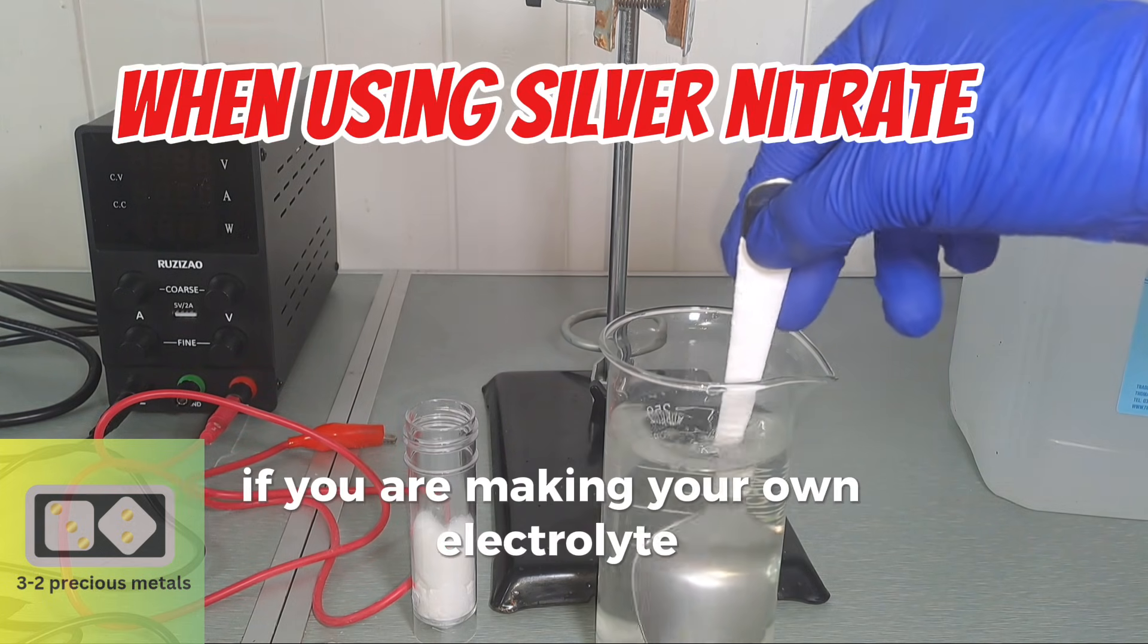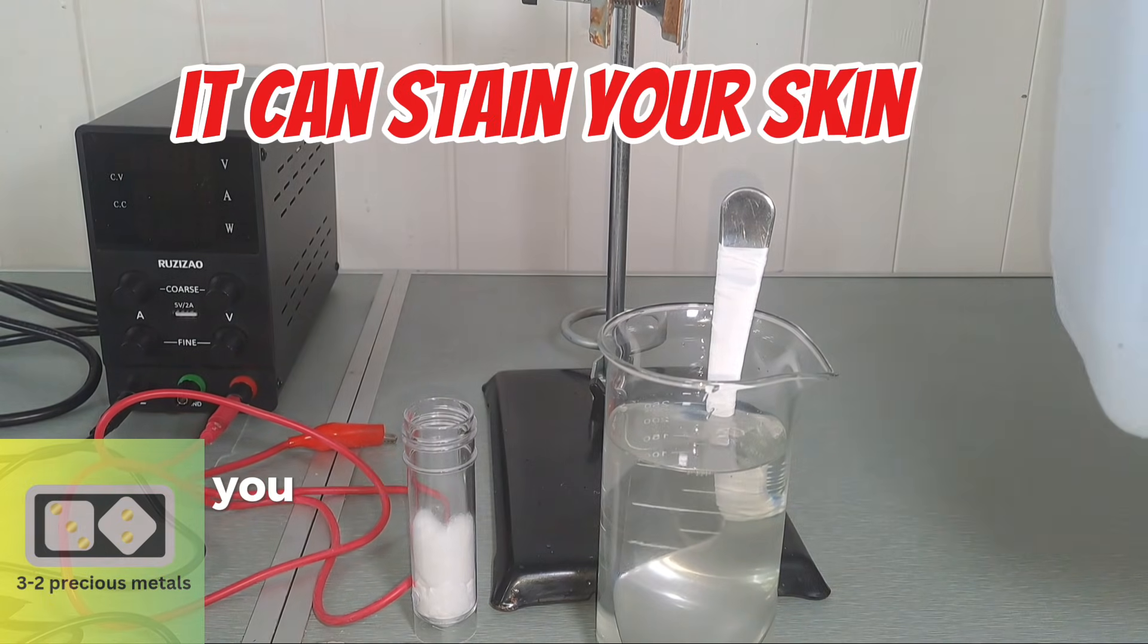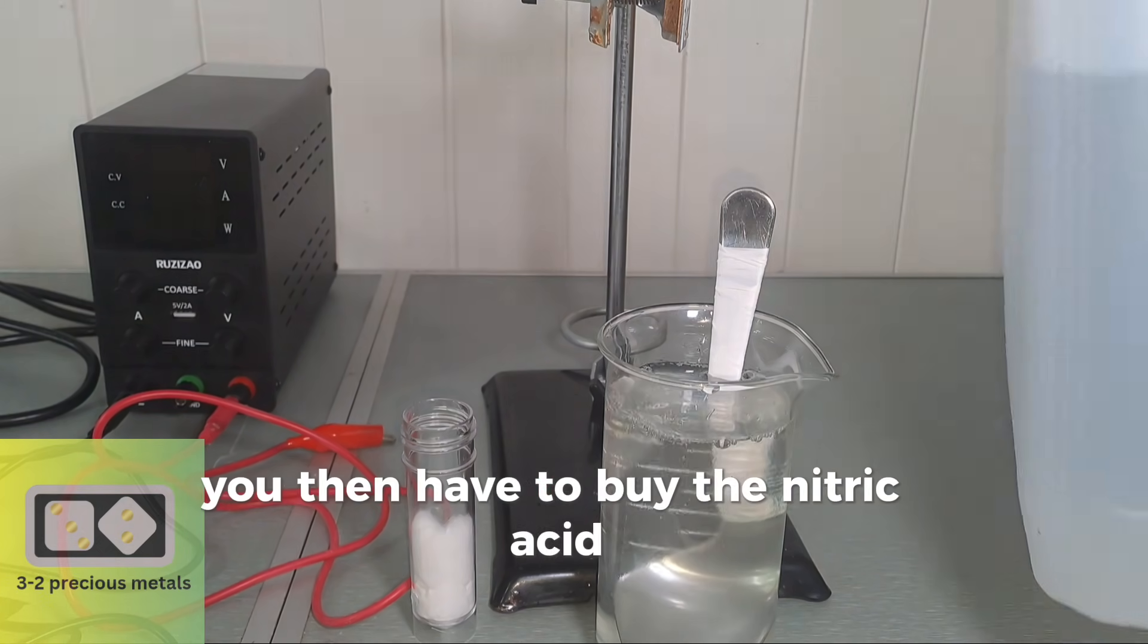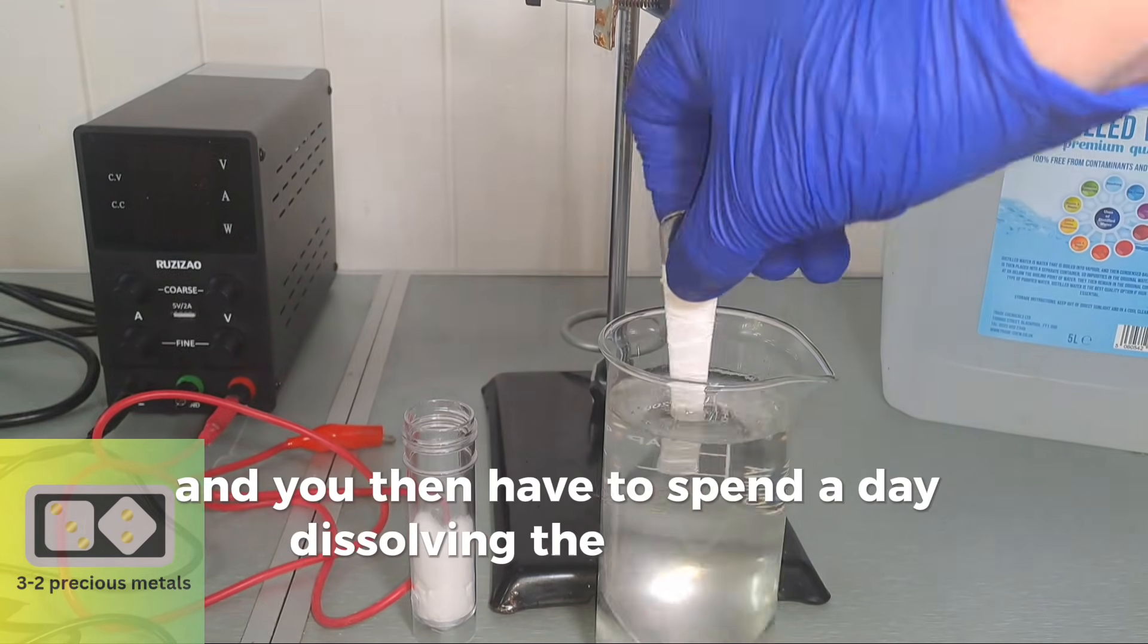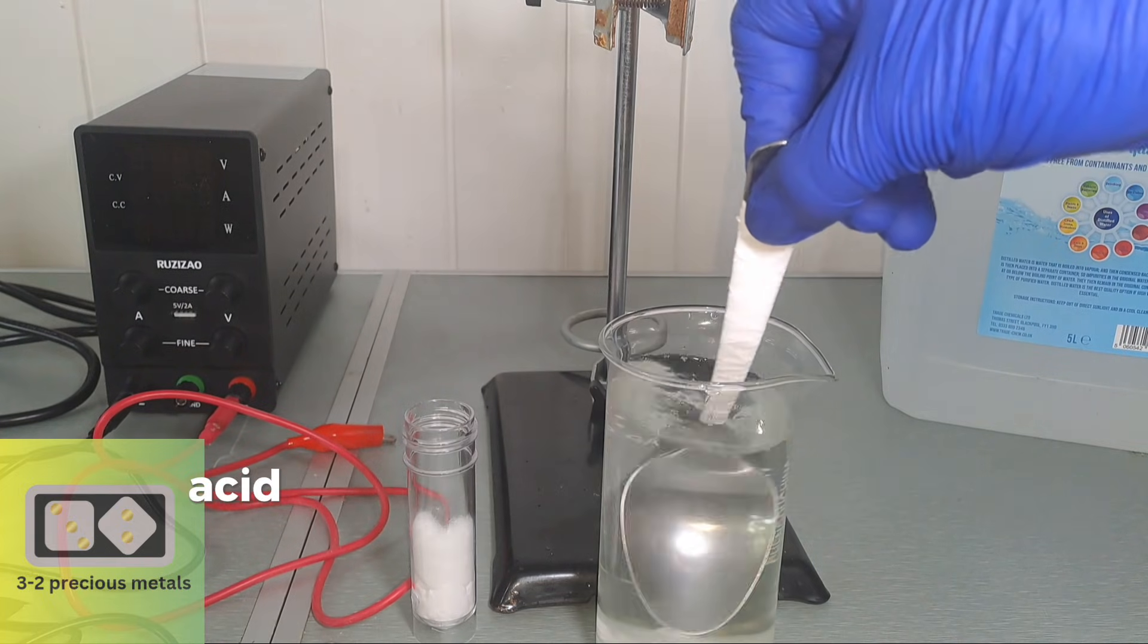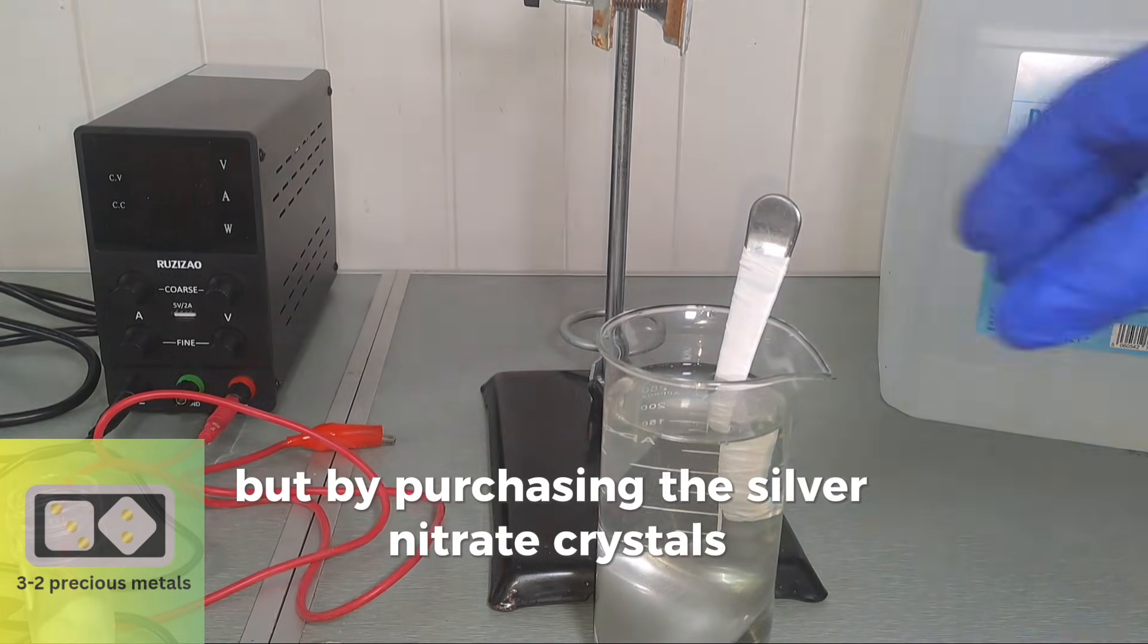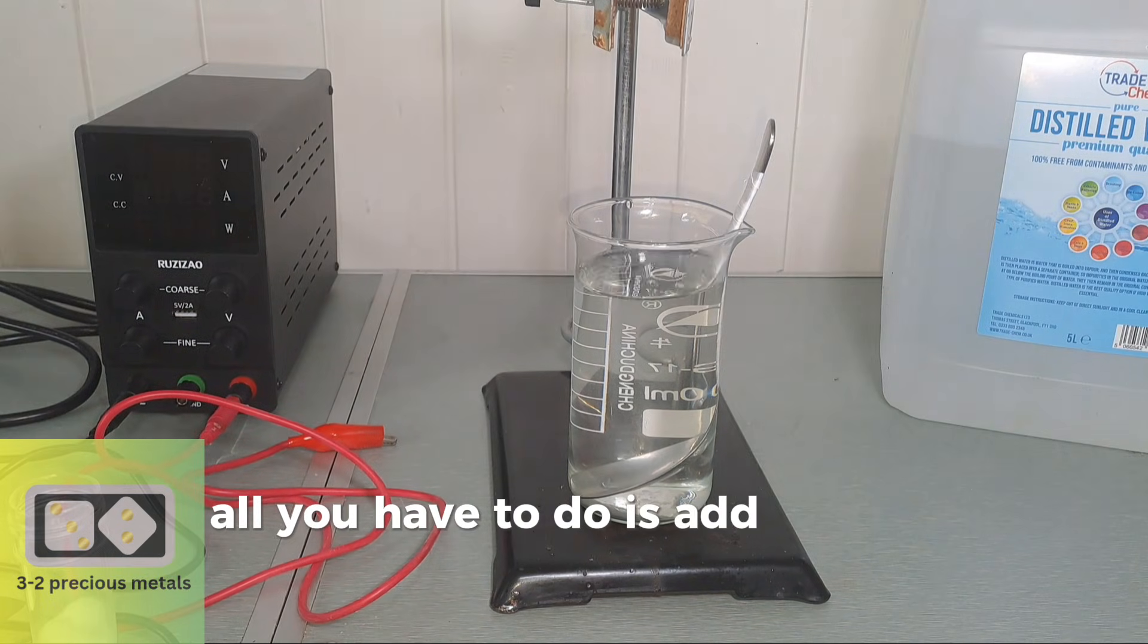If you are making your own electrolyte by dissolving pure silver in nitric acid, you have to first purchase the silver, which probably has a premium attached. You then have to buy the nitric acid, which is expensive in some countries, and you then have to spend a day dissolving the silver and making sure you've gotten rid of all the nitric acid in the electrolyte. The result is silver nitrate in water. But by purchasing the silver nitrate crystals, all that work has been done for you. All you have to do is add water.